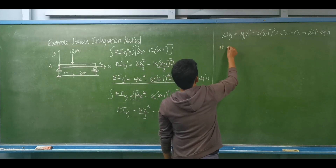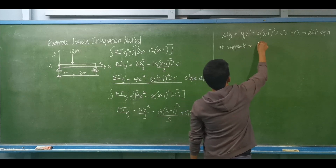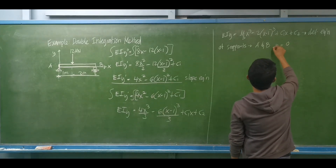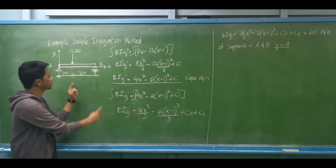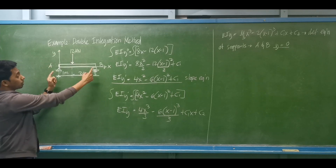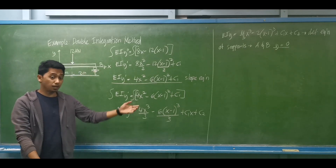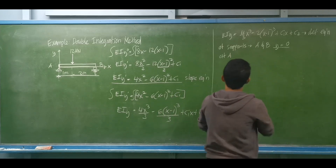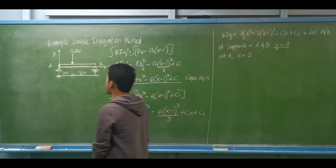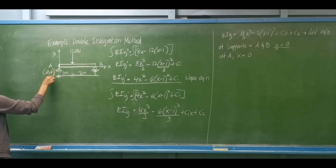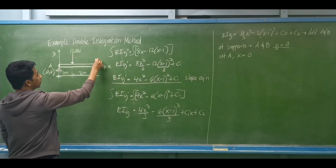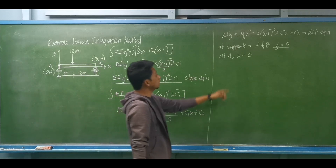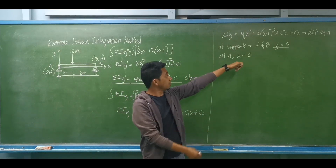At supports A and B, the deflection y should equal 0. Since A is the origin, its coordinate is (0, 0) and B has coordinate (3, 0). At support A, x equals 0 and y equals 0. Substituting into the deflection equation: EI(0) = (4/3)(0)³ minus 2(0 minus 1)³ plus C1(0) plus C2.